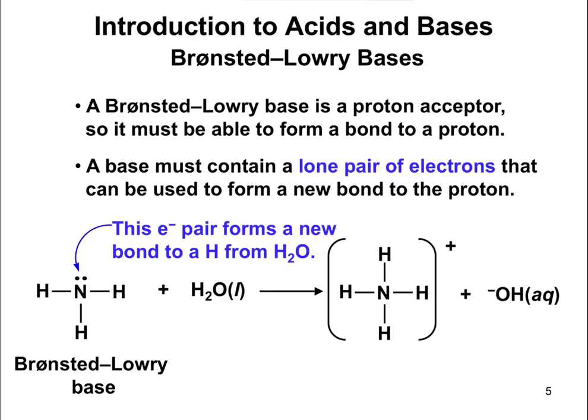Acids have to contain a hydrogen — those are the hydrogens donated to the base. A base is a proton acceptor, so it has to be able to form a bond with a proton. A covalent bond is a sharing of two electrons. H+ doesn't bring any electrons with it, so in order for H+ to form a bond with something, there has to be a lone pair — two free electrons — available for H+ to bond to. A Bronsted-Lowry base has to have a lone pair of electrons, which is used to form the new bond.